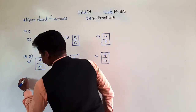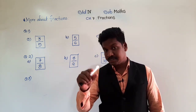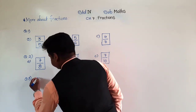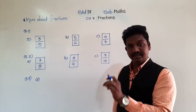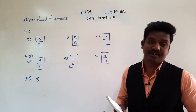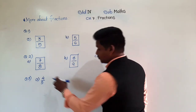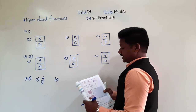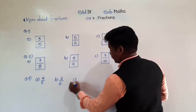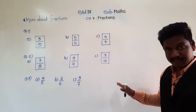Then see question number 3: write the fraction for each of the following. They have given fractional numbers — the number names of the fraction — and we have to write the fraction for each. Directly write the answer. See the first one: 4 fifths. So how will you write the fraction for 4 fifths? 4 fifths means 4 upon 5. B: the second one is 2 sixths — 2 sixths means 2 upon 6. Then 3 sevenths — 3 sevenths means 3 upon 7. Solve the remaining ones immediately.